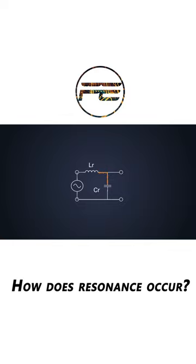After that, the capacitor will provide the same energy back to the inductor. This energy gets transferred back and forth between the capacitor and inductor, and this back-and-forth transfer of energy creates oscillation at the output.